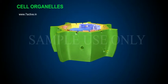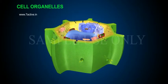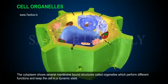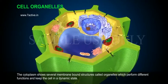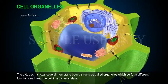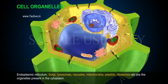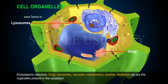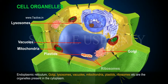Cell Organelles. The cytoplasm shows several membrane-bound structures called organelles which perform different functions and keep the cell in a dynamic state. Endoplasmic reticulum, Golgi, lysosomes, vacuoles, mitochondria, plastids, ribosomes, etc. are the organelles present in the cytoplasm.